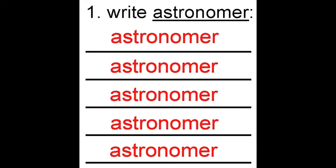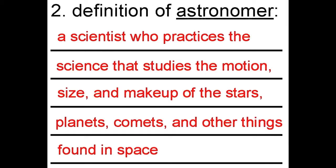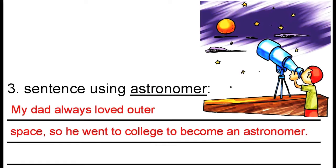Here, the student will write each word five times and then write each definition once. Then, write a sentence using the word and showing its meaning without just restating the definition. An example of a good sentence is, my dad always loved outer space, so he went to college to become an astronomer.